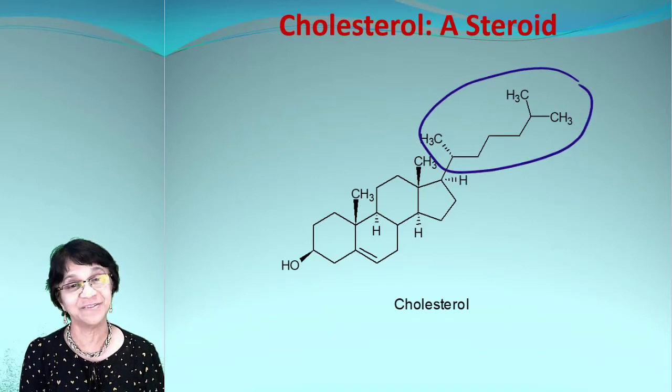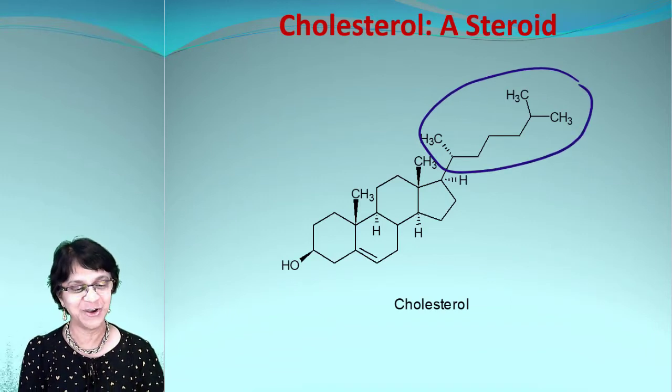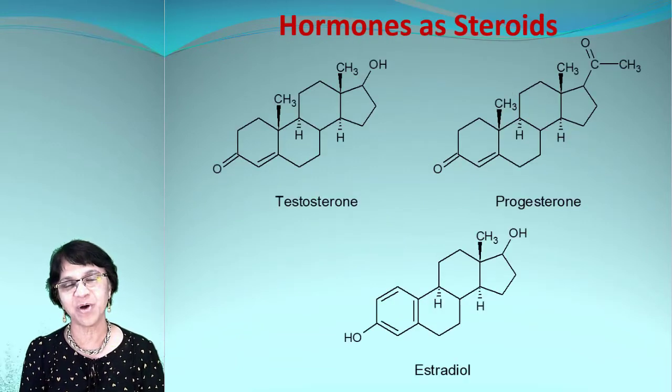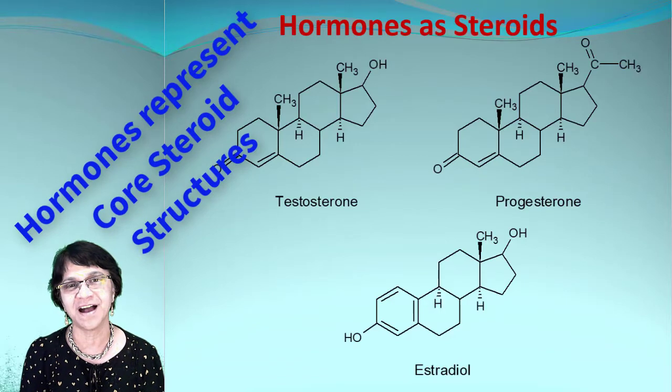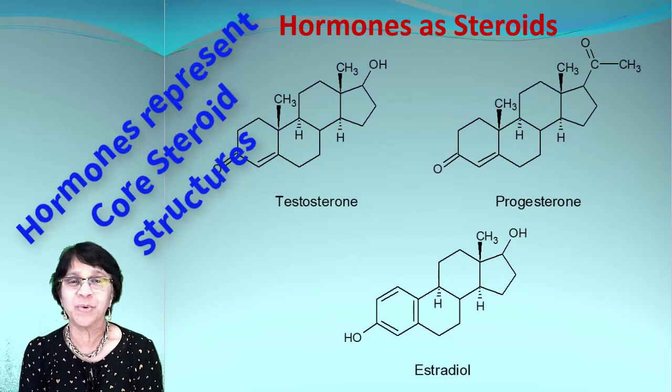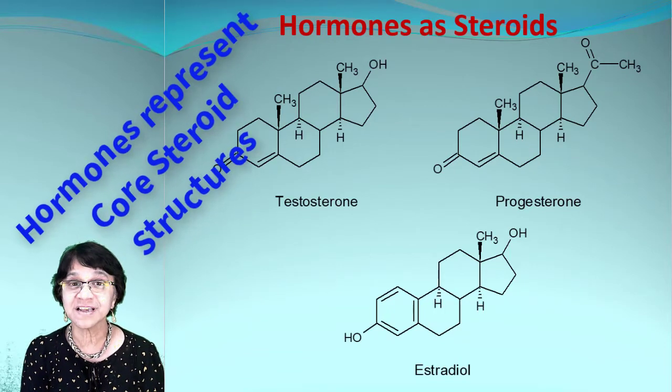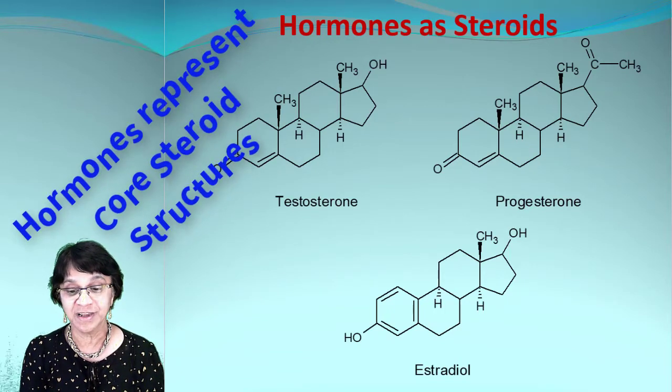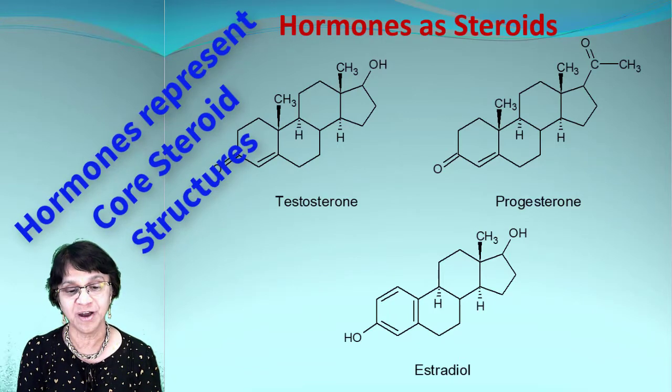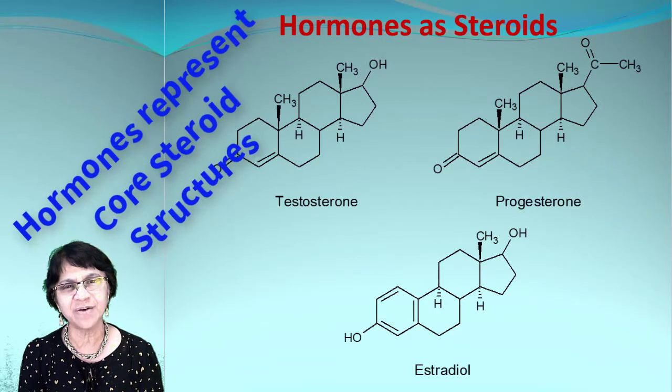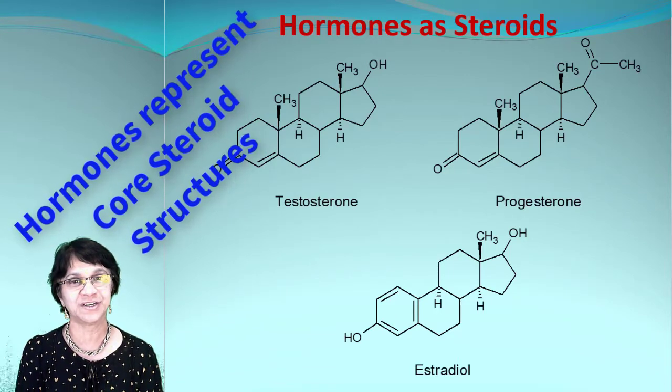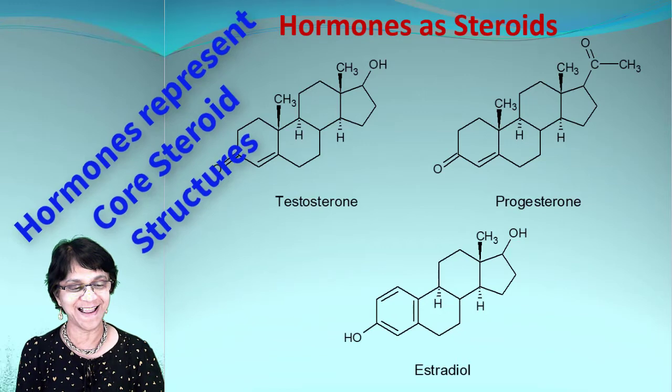Let's see how the hormones are important for our body. These are just a few examples. There are more. Testosterone, this is a male hormone. Progesterone and estradiol, both are female hormones. Again, they all have some basic structure: four rings, and of course different groups attached to that. Therefore, the numbering for all of them works the same.